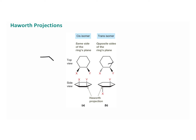If things are on the same side of the ring's plane, you'll see them as either both dashes or both wedges. As long as both are dashes or both are wedges, they're going to be cis. If one is a dash and one is a wedge, they are going to be trans, which you can see more clearly in the Haworth projection.